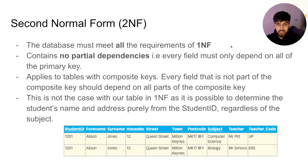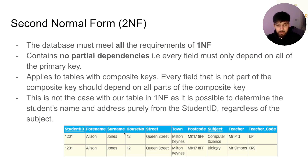Second Normal Form: the first mark to get right is to say that it has to meet all the requirements of First Normal Form. It should contain no partial dependencies, meaning every field must depend on all of the primary key. This applies to tables with composite keys — every field that is not part of the composite key should depend on all parts of the composite key.